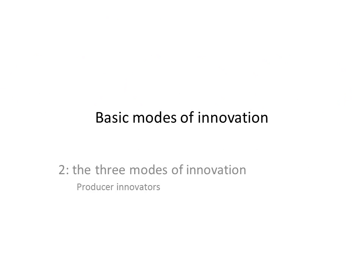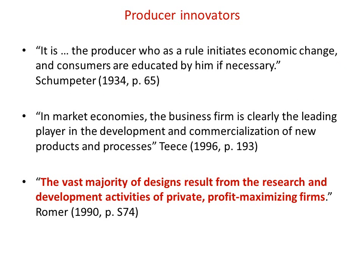A producer innovator, as a rule, is an agent — it can be both an individual and an organization — which, according to Schumpeter, initiates economic change in order to profit from selling a good, a product or a service. So the producer innovator is an innovator that develops products and services in order to sell them, in order to profit from transacting goods and services in exchange for financial rewards.